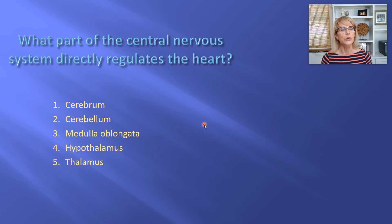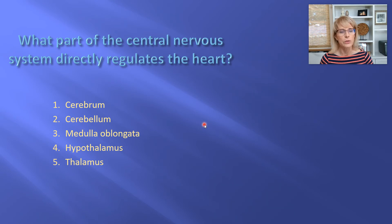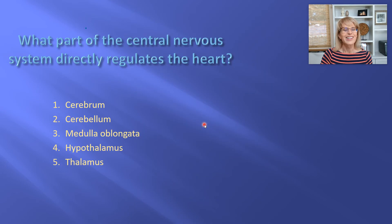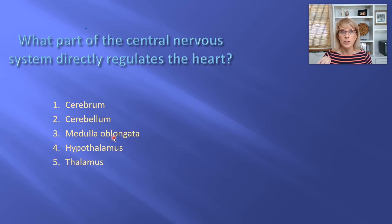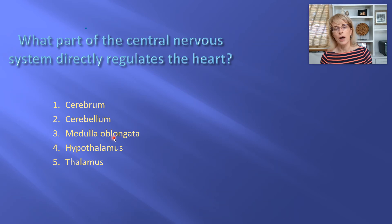What part of the central nervous system directly regulates your heart? Go ahead and check your notes. The answer is the medulla oblongata. The medulla oblongata is sending commands to your heart through the autonomic nervous system, both sympathetic and parasympathetic.